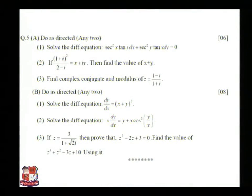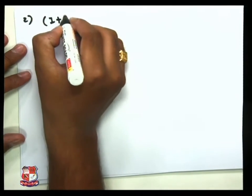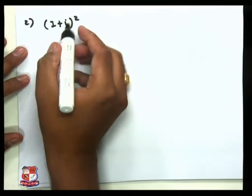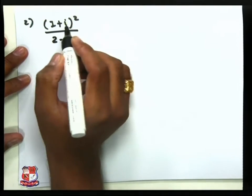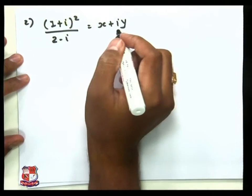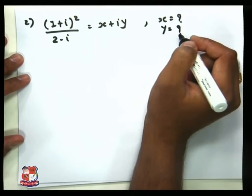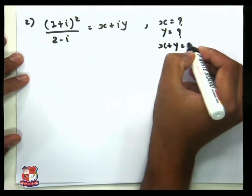Our next question: if (1+i)² / (2−i) = x + iy, then find the value of x + y. We write down (1+i)² / (2−i) = x + iy. We want to find the values of x and y first, and then find x + y.